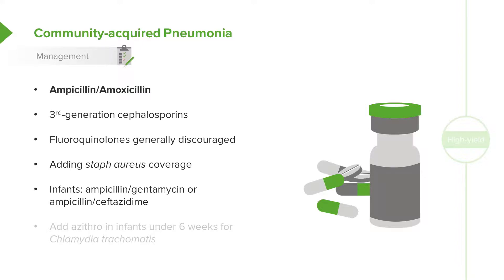For infants, we do use broader-spectrum agents because these infants are prone to other infections like E. coli, which can get into the lung. We often will also add azithromycin for infants under six weeks of age due to concern over possible Chlamydia trachomatis, and we'll test for that through a nasal PCR.